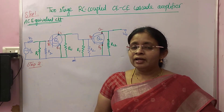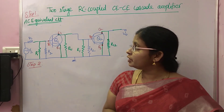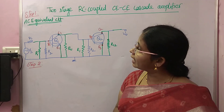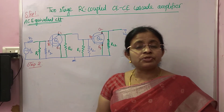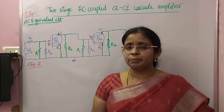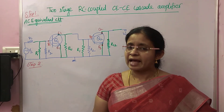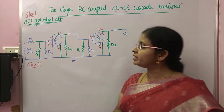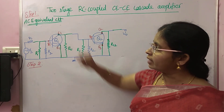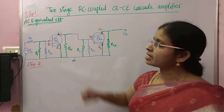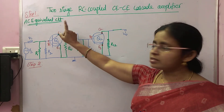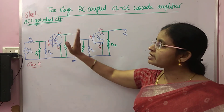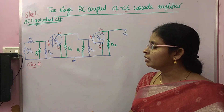Hello everyone. In this video I am continuing the analysis of two-stage RC-coupled CE cascade amplifier. In the last video I completed up to step 1, which is the AC equivalent. Drawing the AC equivalent is step 1.